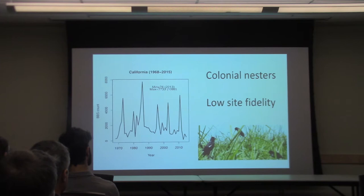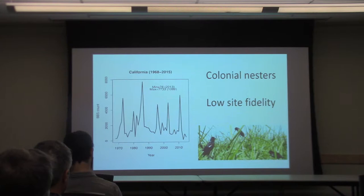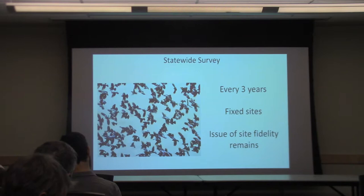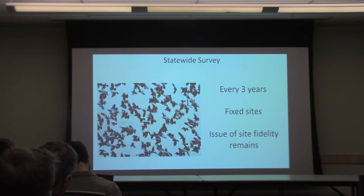BBS was one thing we looked at, but what BBS tells us confirms what we already know: that these are colonial nesters with very low site fidelity. If a colony settled near a BBS route one year we see a spike; if it didn't, we don't. So BBS was not going to be super useful. There's also a tricolor blackbird-specific survey done in California every three years, but that three-year time step was too coarse for an IPM when we had yearly data for the other pieces, and the survey may also suffer from site-fidelity issues.